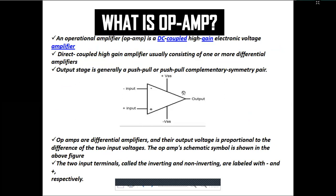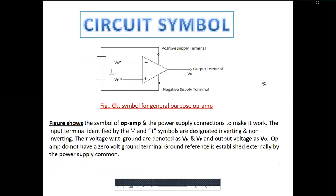Now, what is an op-amp? This is the circuit diagram or symbolic representation of op-amp. It has two inputs, two supply pins, and one output. Op-amps are differential amplifiers and their output voltage is proportional to the difference of the two input voltages. The two input terminals are called inverting and non-inverting — minus means inverting and plus means non-inverting.